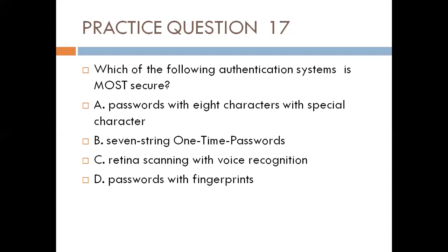Question seventeen. Which of the following authentication systems is the most secure? A. Password with eight characters and special character, B. Seven-digit one-time password. The one-time password is sent to your phone. Both biometric options — fingerprint and retina scan — are biometric factors. Your best answer is D — password (something you know) combined with fingerprint (something you are). That is two-factor authentication and will be more reliable. So the answer is D.